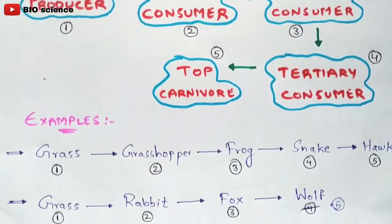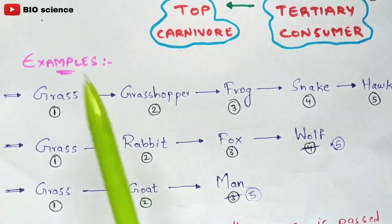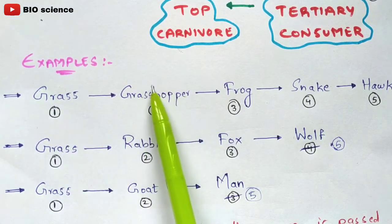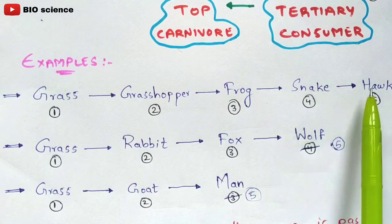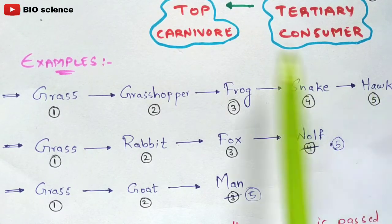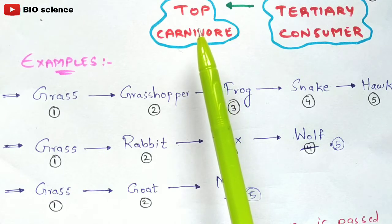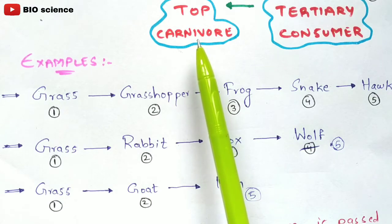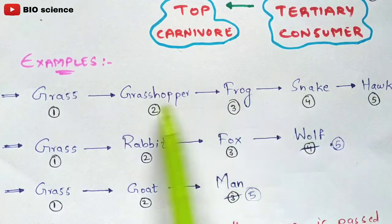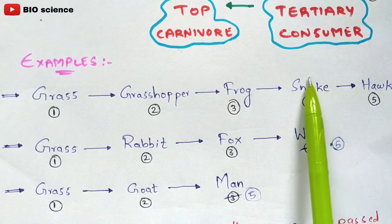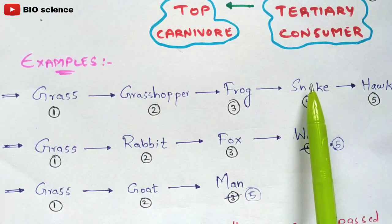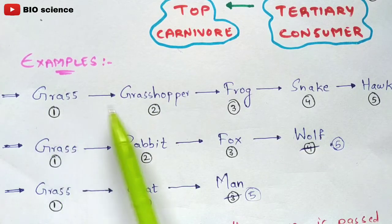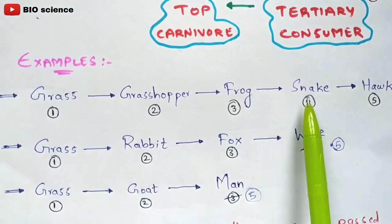Let us take examples. The first example is: grass, grasshopper, frog, snake, and hawk. Grass is the producer, grasshopper is the primary consumer, frog is the secondary consumer, snake is the tertiary consumer, and hawk is the top carnivore — also called climax carnivore in some books. Here the hawk eats the snake, the snake eats the frog, the frog eats the grasshopper, and the grasshopper eats the grass. This is how the food chain is designed.